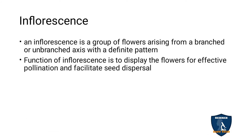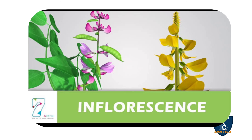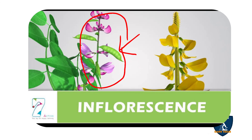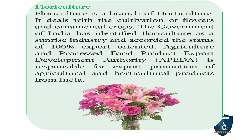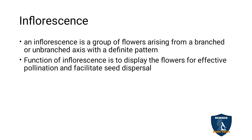Inflorescence means a group of flowers arranged on a branched or unbranched axis in a definite pattern. The functions of inflorescence are: effective pollination — to display the flowers for effective pollination — and seed dispersal.